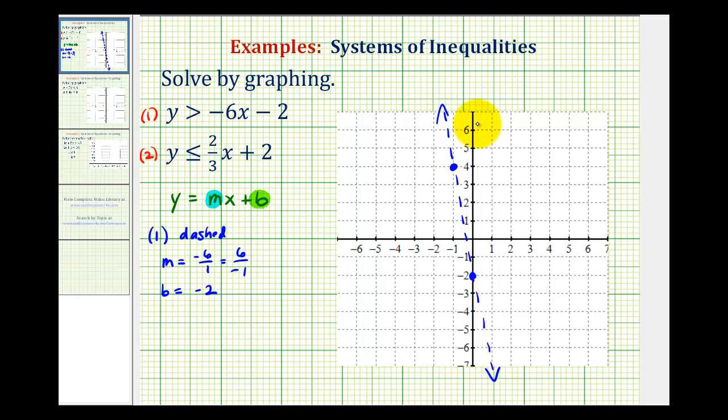Instead of shading, I'm going to draw arrows to indicate which region because, remember, we're looking for the double shaded region. Of course, if we wanted to, we could select a test point to determine which side to shade as well.